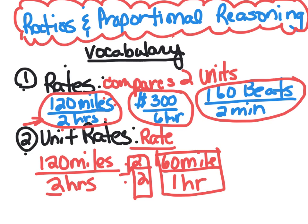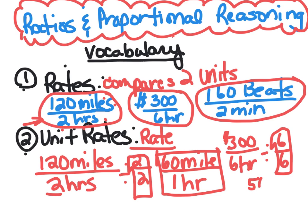So let's do this one: $300 - you have to have your labels - for six hours. You would divide by six over six because really that's just a one. 300 divided by six would be $50, and six divided by six would be per hour.